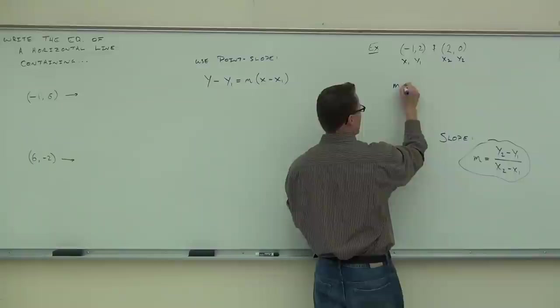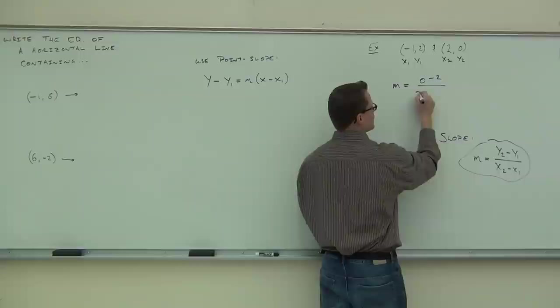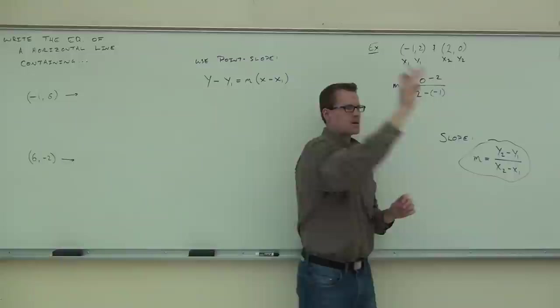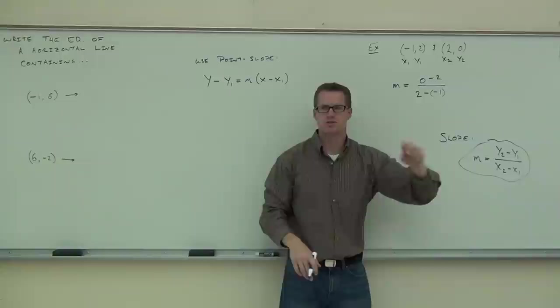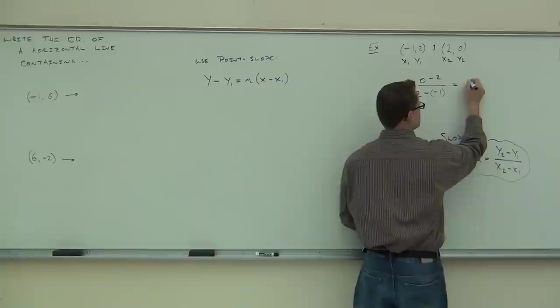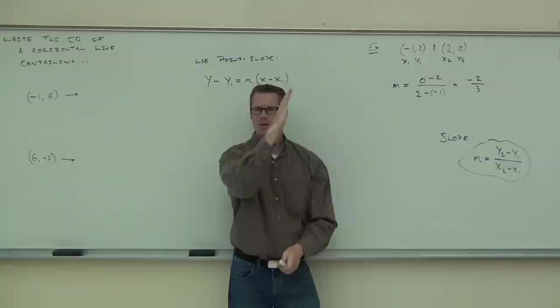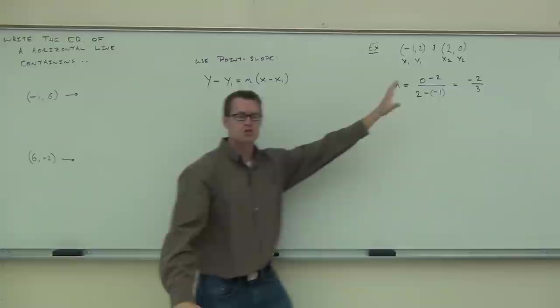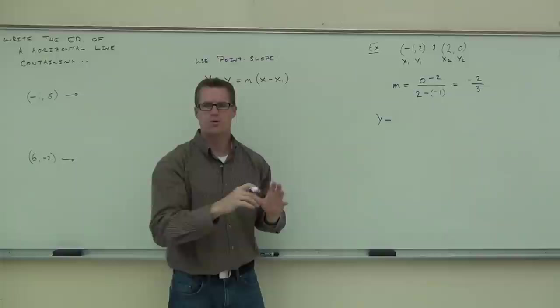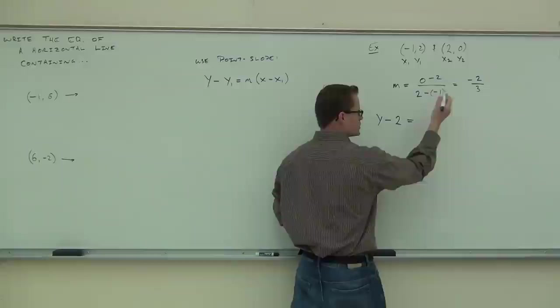I'm going to do it the way most people picked. So x1, y1, x2, y2 — we're going to find our slope first. We're going to have zero minus two over two minus negative one. How many people have it exactly like that on the paper with the minus and the negative? That's important. We take zero minus two; two minus — that minus has to be there no matter what. That just happens to be negative one. So we have the minus and the negative. What does minus the negative do? This is negative two over three.